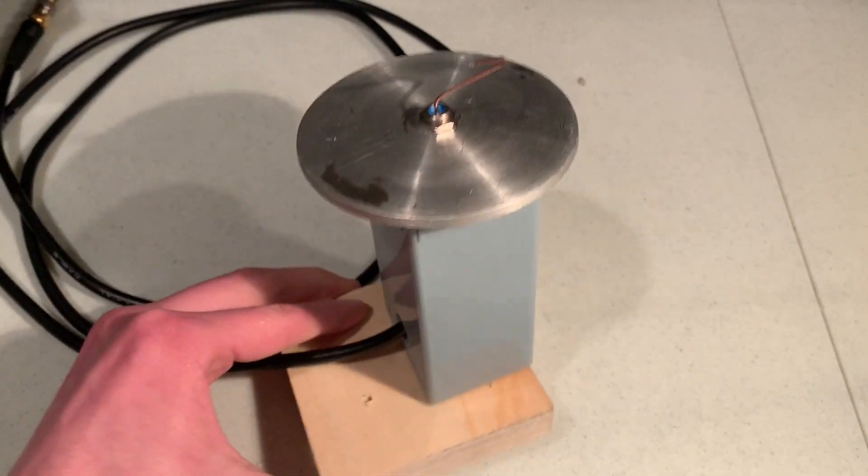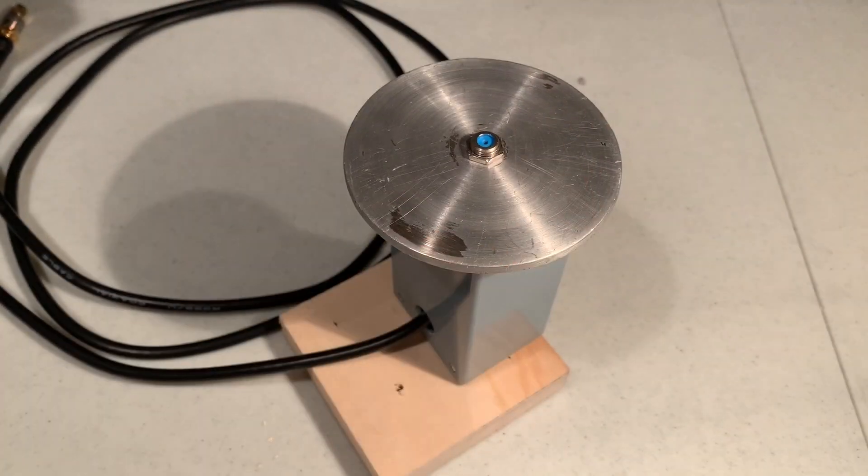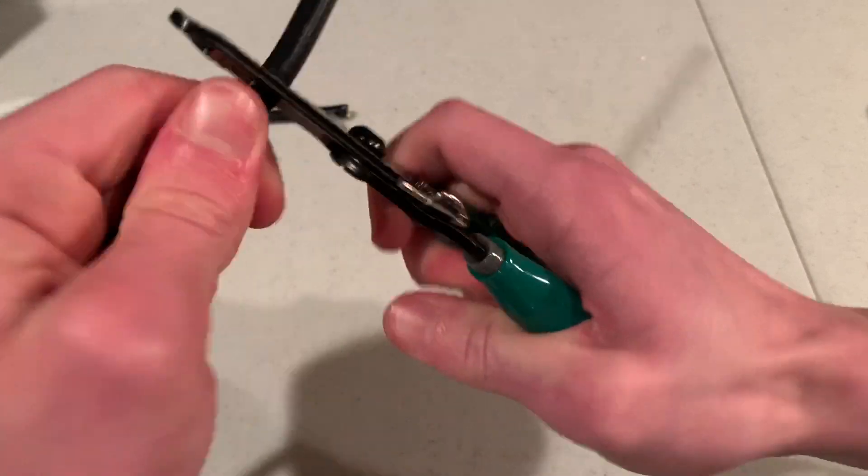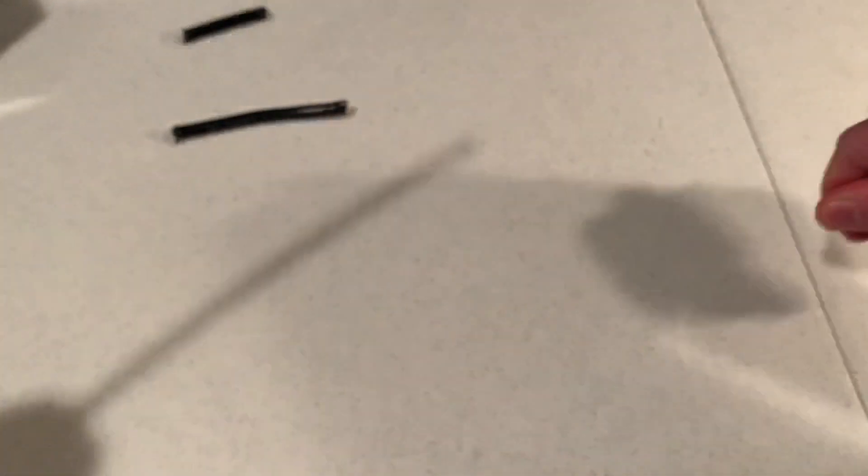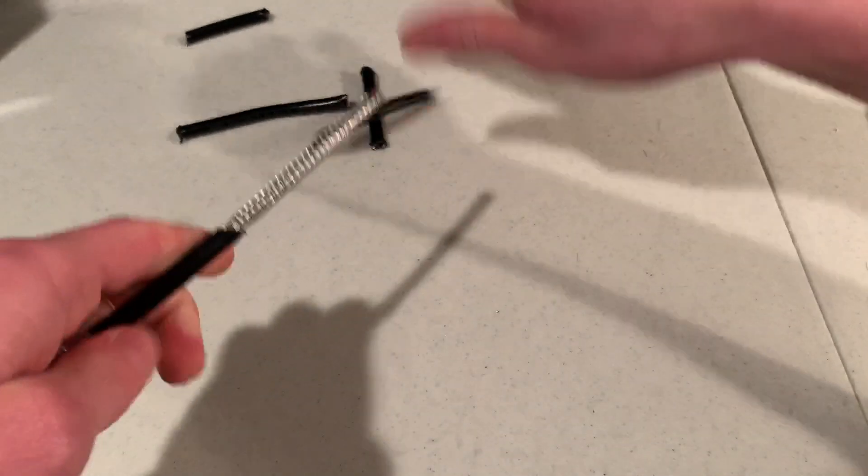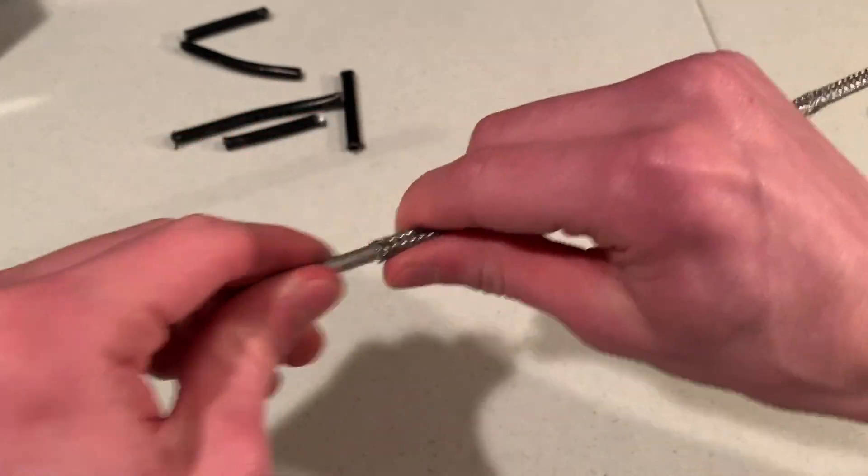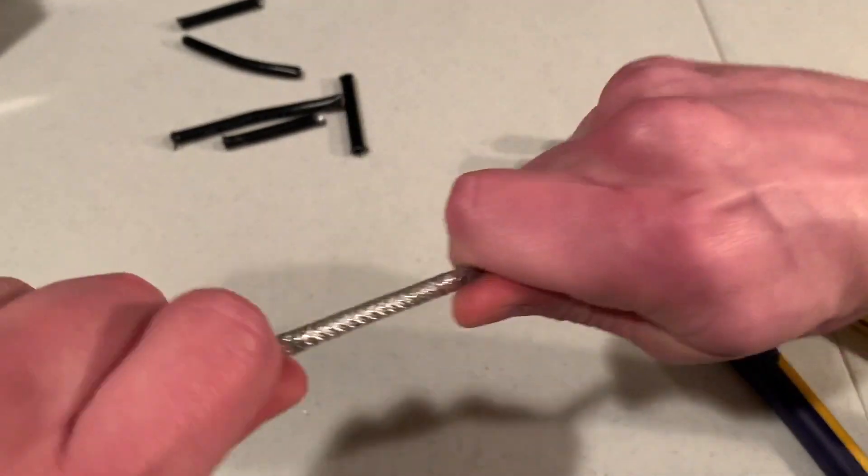And then after a while thinking, I realized that coax, specifically the center conductor of a piece of coax cable would be perfect. Since it is designed for the F-type connector that I'm using. So I got a whole big piece of coax and then I stripped the whole thing down all the way to the center conductor. Which was really weird, I had never done that before. And especially taking off the entire shielding was, again, something I had never done.